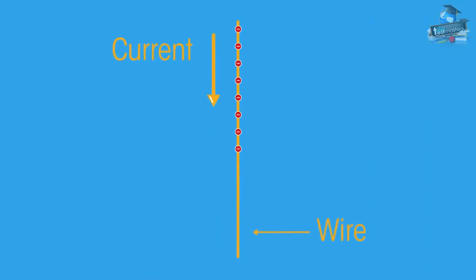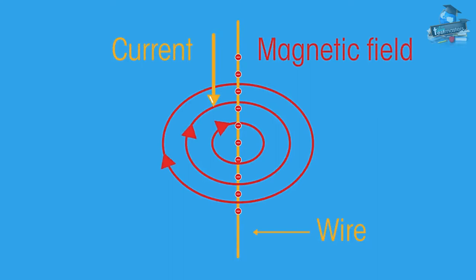When a current flows in a wire, it creates a circular magnetic field around the wire.